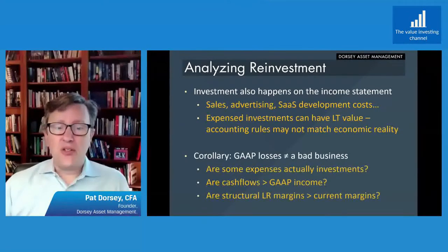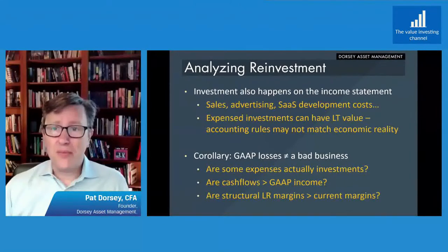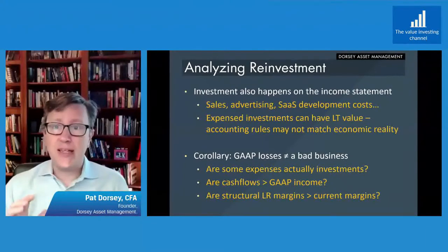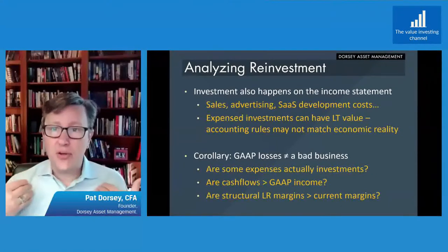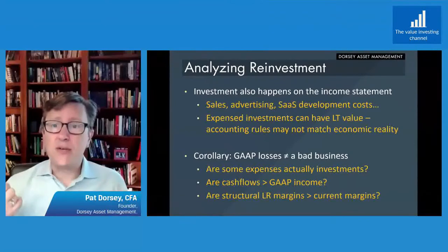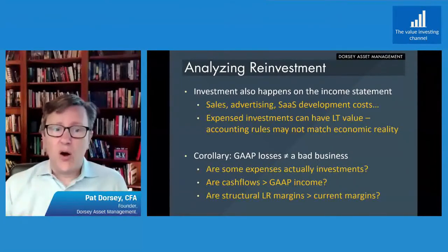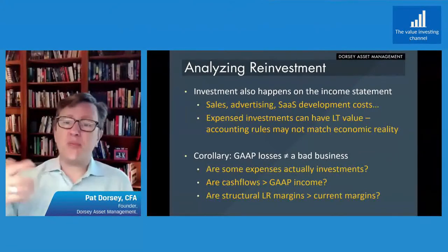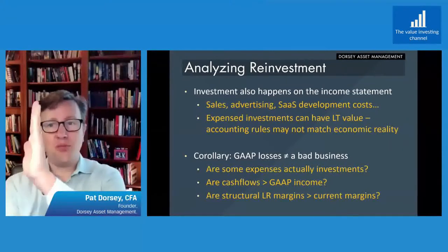You need to think about the fact that many of these expenses in some businesses are actually investments in future periods. What that means is that future margins may be much, much higher than current margins, because those investments will decline over time as the company gains scale. GAAP losses don't necessarily mean something is a bad business. Some expenses are actually investments; cash flows may be higher than GAAP income. Many companies have negative working capital and may be generating great cash flow with really ugly-looking net income losses. Expensing stock options causes a huge hit to the income statement, but there's often a cash inflow as employees are exercising options.